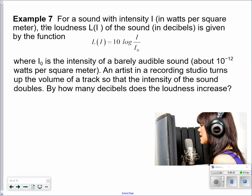Now, this one's a pretty complicated question. They want to know for the sound with the intensity I in watts per square meter of loudness and sound in decibels is given by the function, where I sub 0 is the intensity of a barely audible sound about 10 to the negative 12th. An artist in a recording studio turns the volume of a track, so the intensity of the sound doubles. By how many decibels does the loudness increase? So now they want to double the intensity. They want to double the I. So they want to know what the L of 2i is compared to the L of i is.